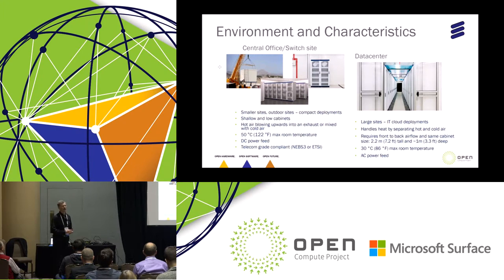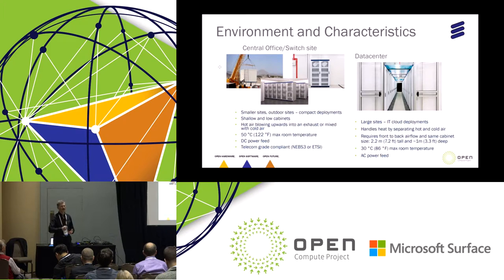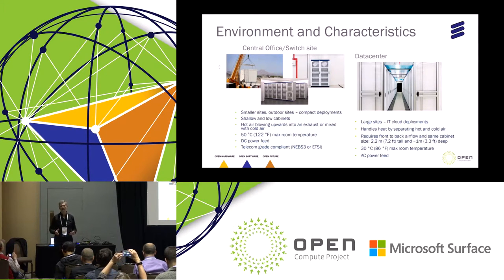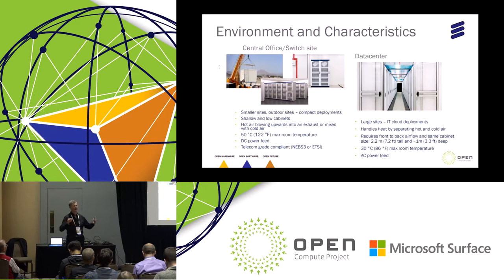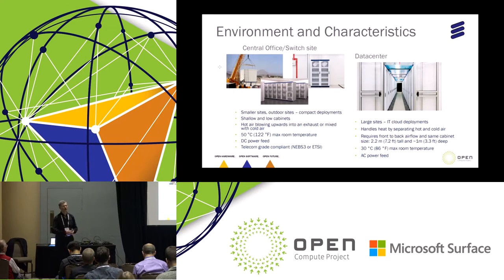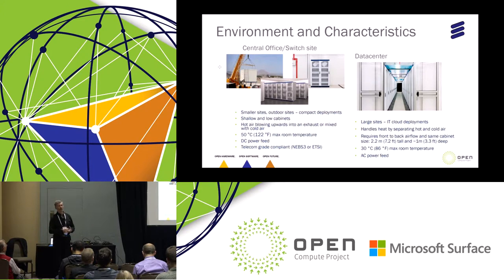What differentiates these sites when it comes to characteristics? In the data centers — the hyperscalers — they tell you that scale is everything, that IT-type cloud deployment is the ruling one, and that you can handle things by controlling the environment. That makes sense if you have a lot of equipment, because it's expensive to handle each piece of equipment individually. It's easier to make an artificial environment that is very good for the equipment. Generally you'd be on a 7-foot height, maybe 1 to 1.2 meter depth, 30 degrees C room temperature, and AC power feed is very normal in this kind of environment.